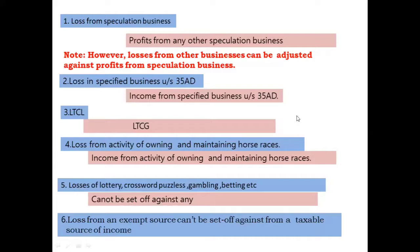The fourth one: loss from activity of owning and maintaining horse races. If you have a loss from activity of owning and maintaining horse races, you can only set it off against income from the same activity — owning and maintaining horse races.